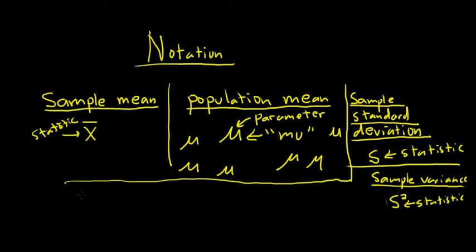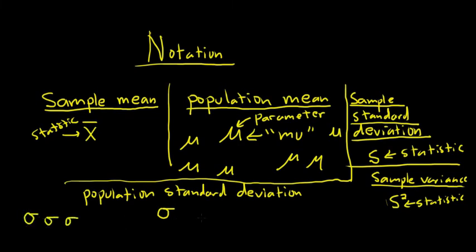And then the last few are pretty simple. We have the population standard deviation. So the symbol we use for that is this one. It's sigma. Looks like a little O with a dash. Sigma. And this is a parameter.